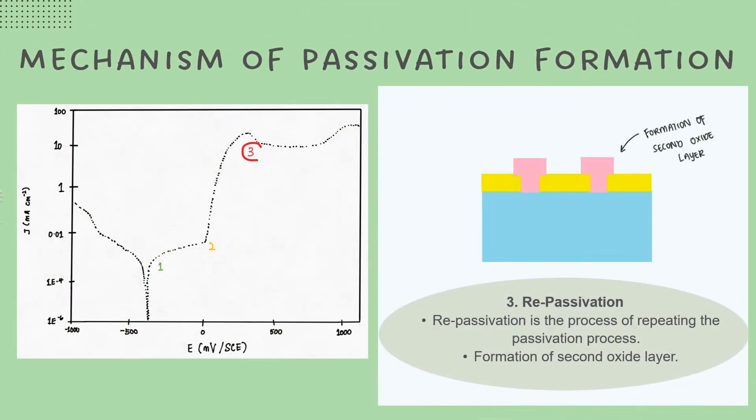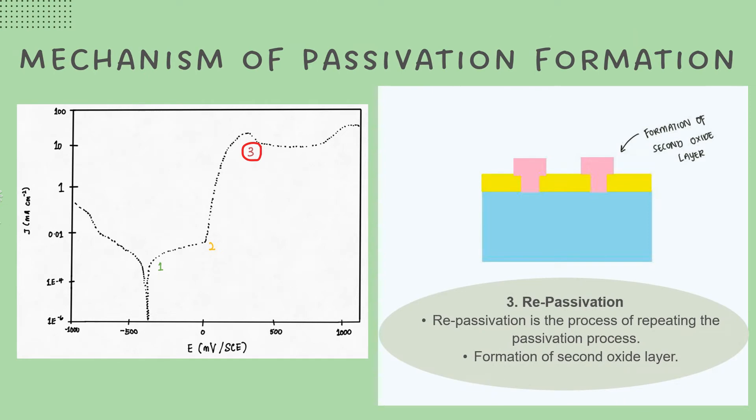For the third part of passivation formation is repassivation, which is the process of repeating the passivation process. The newly exposed surface will react with the electrolyte and generate a new oxide layer, known as the second oxide layer. This layer will again obstruct all electron transport, causing the current to drop.